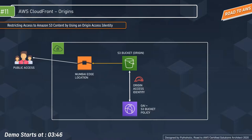An origin access identity, or OAI, is used for sharing private content via CloudFront. We use OAI to share private content through CloudFront — it acts like a virtual user identity. When we correlate it with CloudFront, CloudFront acts like an anonymous user who has access to the objects or data.